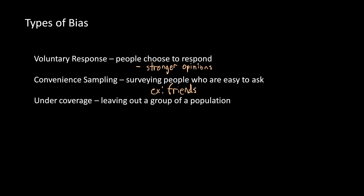The third bias is going to be under coverage. This is where you leave out a group of the population. For example, if you're trying to survey the United States and take a comprehensive sample of people in the United States, but you only survey people from Arizona, that's going to be some pretty serious under coverage since you're not surveying the rest of the 49 states.